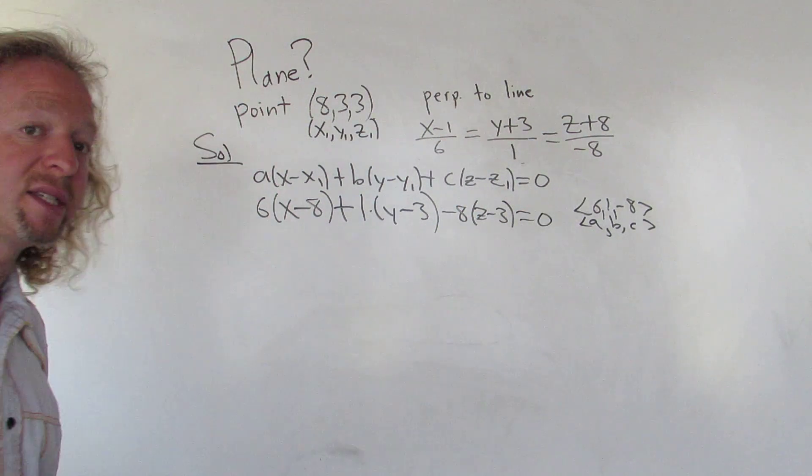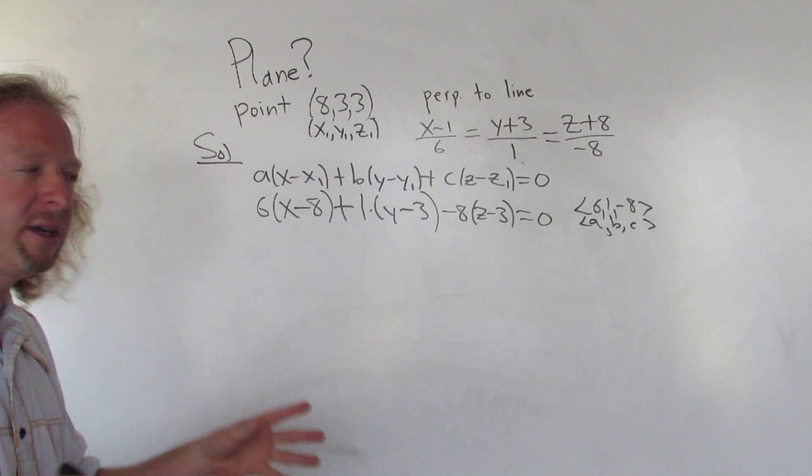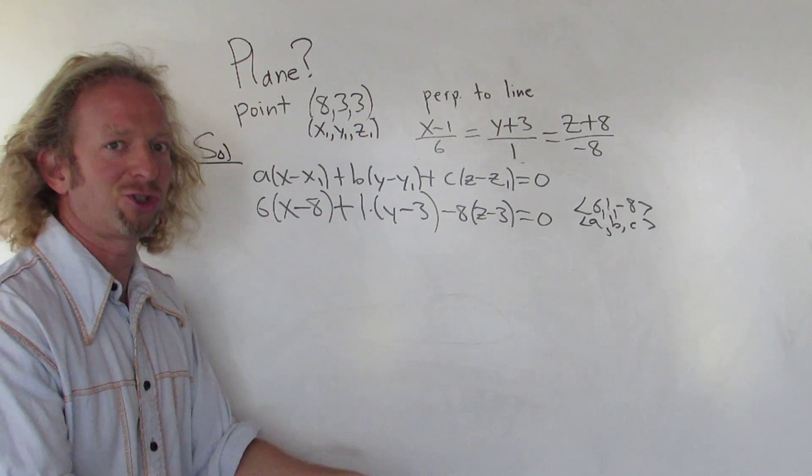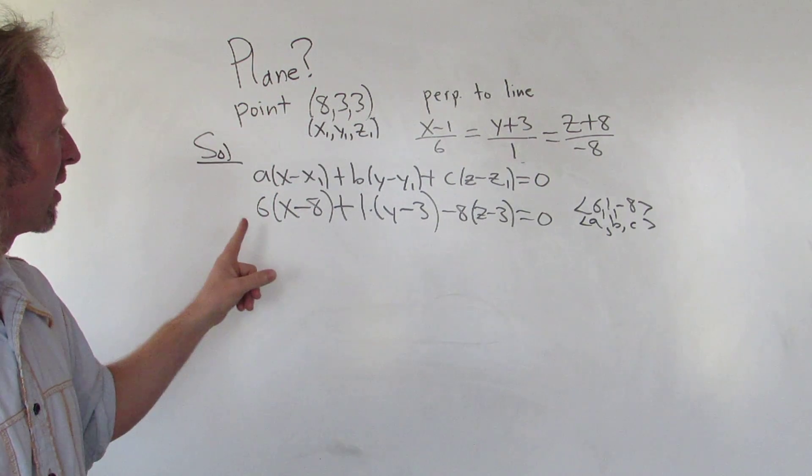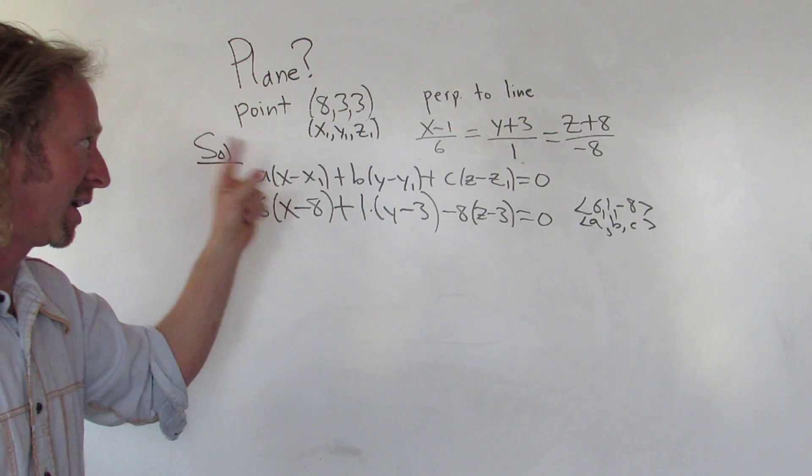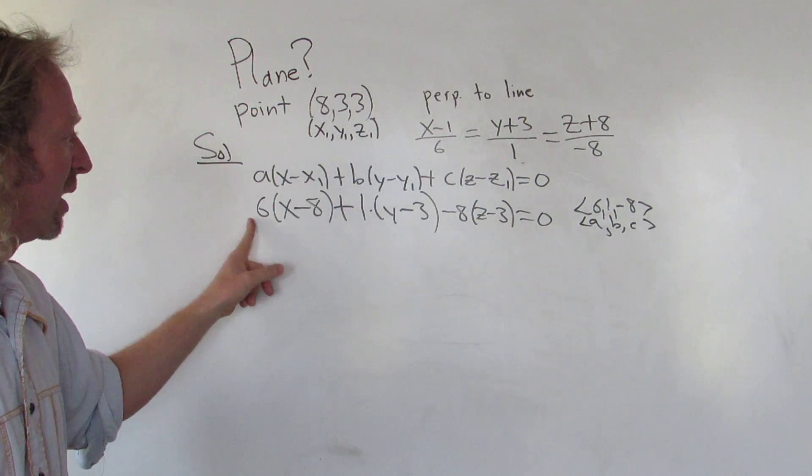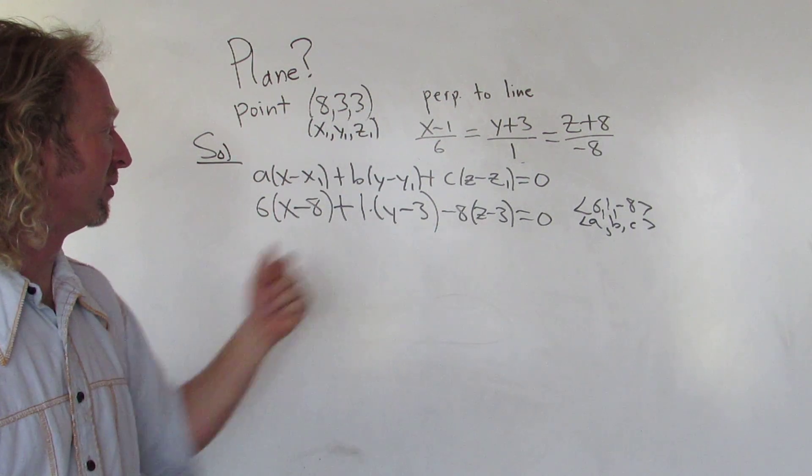A common mistake that I make myself is just plugging in the wrong numbers. Like you do all the thinking, you write everything down so you understand the problem, but you just make a silly mistake plugging in the numbers. So let's just check that. So a, b, c, that's our vector that's normal to our plane. It's perpendicular to our plane. So a, b, c, there it is. And here's our point, 833, beautiful stuff.